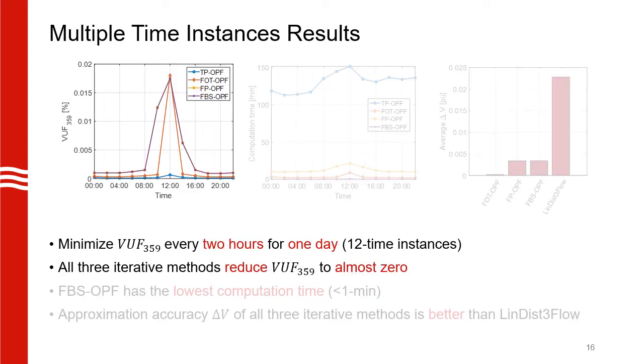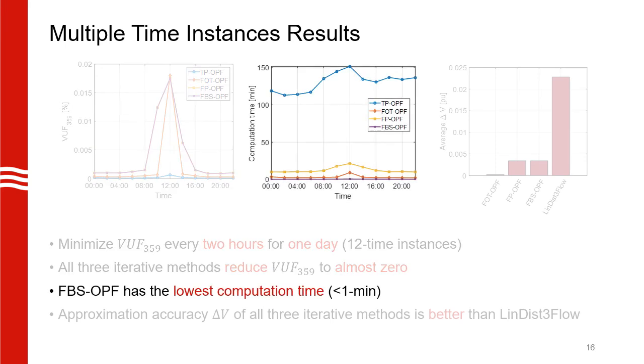Our next set of results are when we solve the OPF multiple times. In this case, we only minimize voltage unbalance at our critical node 359 and we do this every two hours throughout a single day. We can see from the objective values here that all three methods are able to reduce unbalance at our critical node to almost zero. If we look at the computation time, all three methods are significantly faster than TP-OPF with the forward-backward sweep converging to solutions in less than one minute. This is probably because it exploits the radial nature of the network, whereas the other two methods involve calculation of large matrices like the bus admittance matrix and the Jacobian.